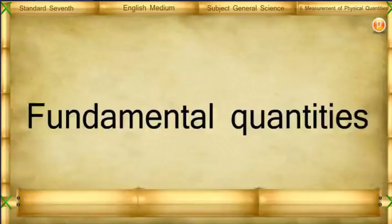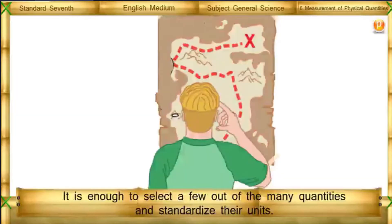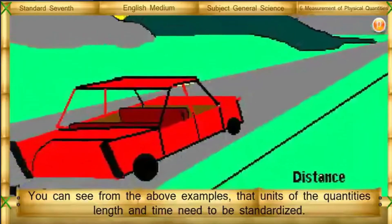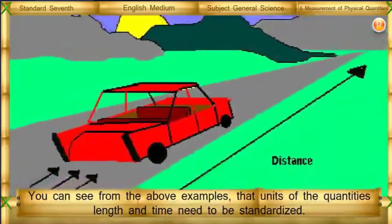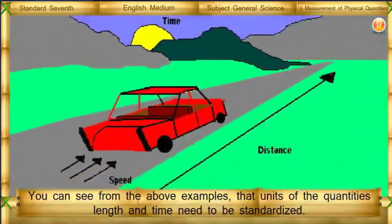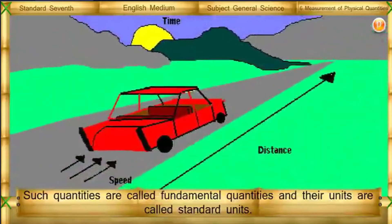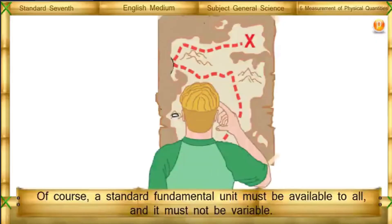Fundamental quantities: It is enough to select a few out of the many quantities and standardize their units. The units of quantities like length and time need to be standardized. Such quantities are called fundamental quantities and their units are called standard units. A standard fundamental unit must be available to all and must not be variable.